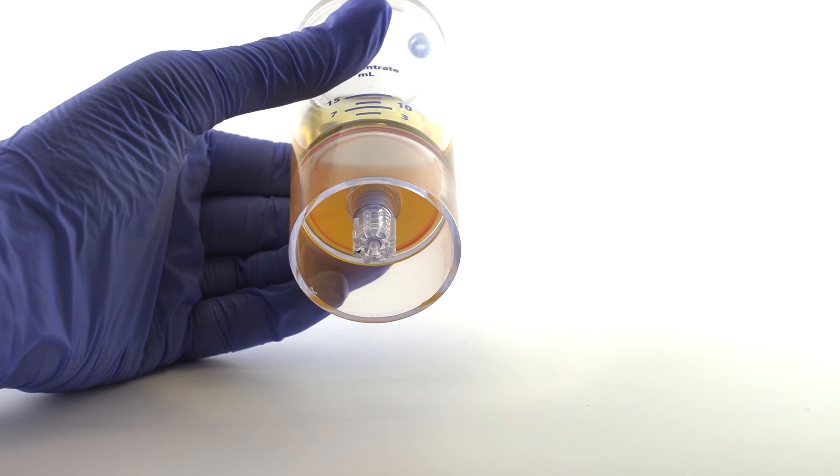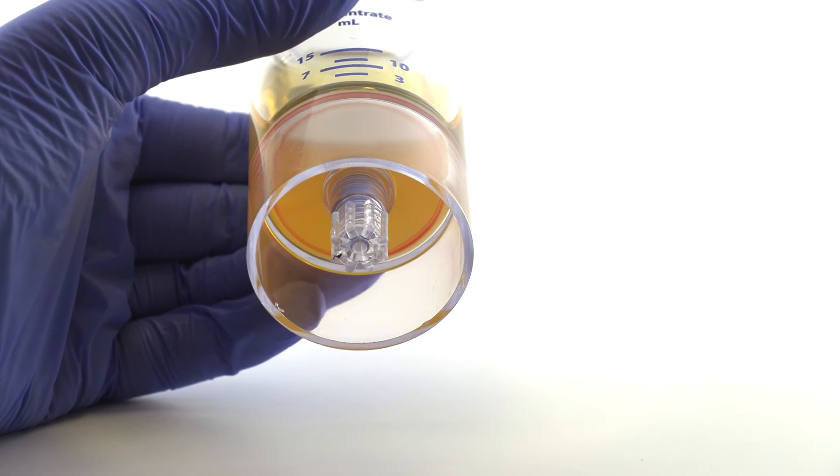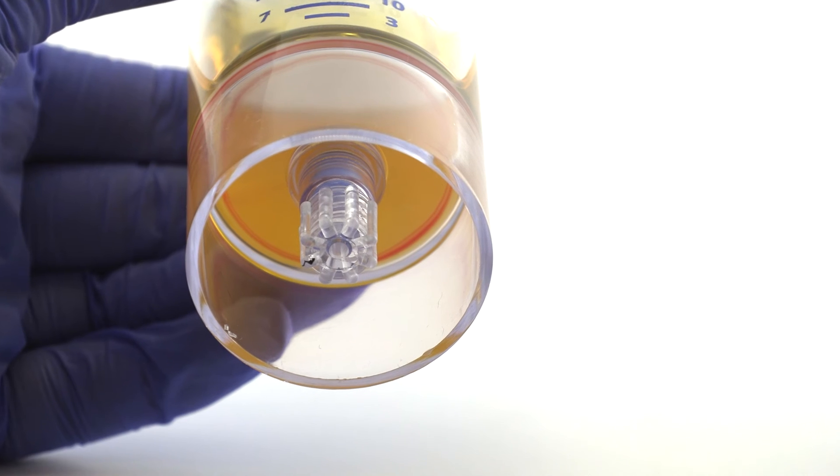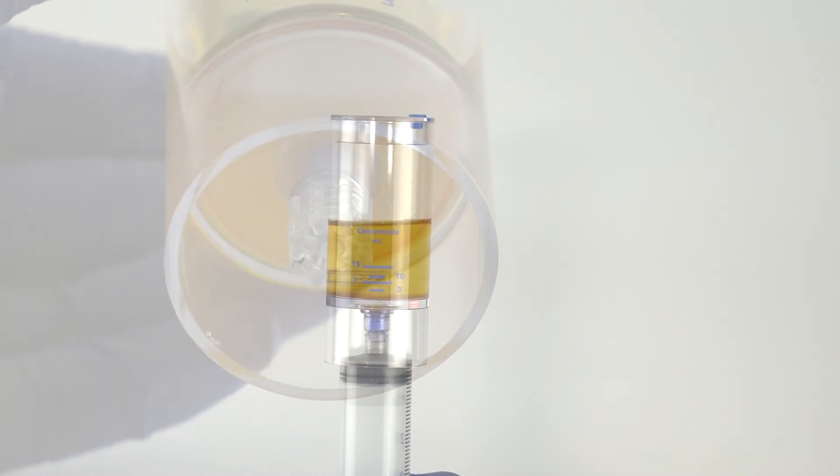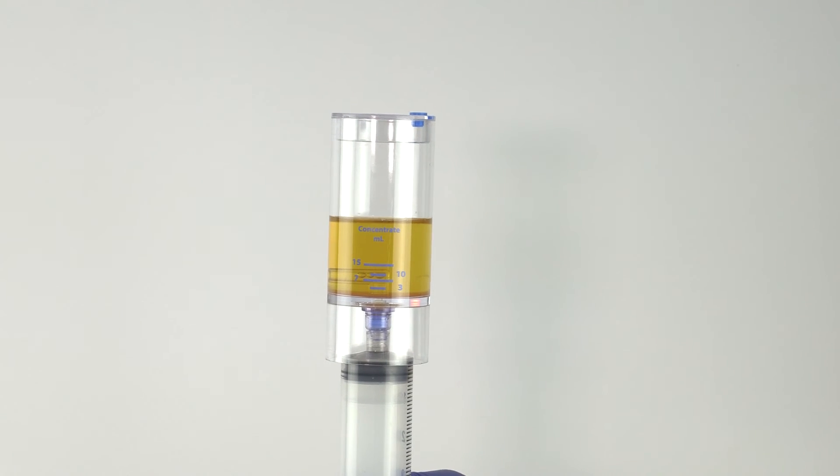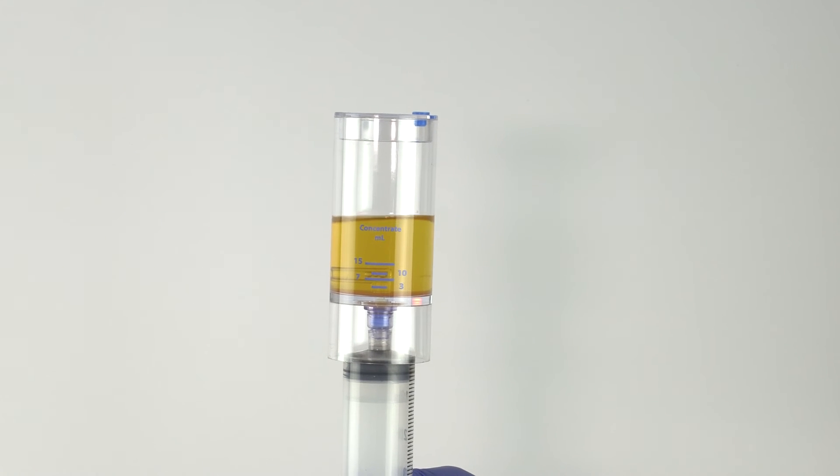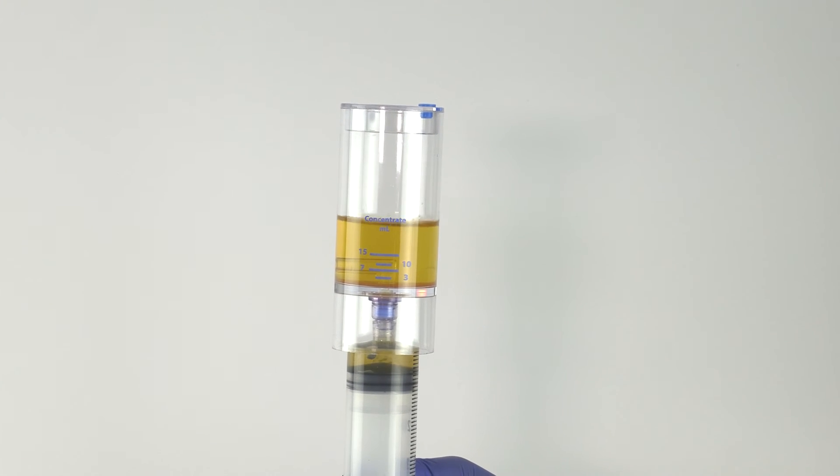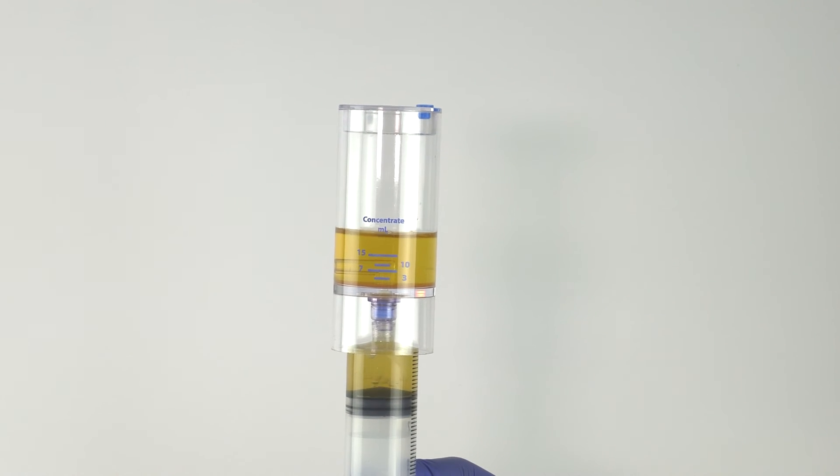After centrifugation, the platelet buffy coat layer will be clearly visible at the bottom of the device. Attach a sterile syringe to the needleless port and aspirate plasma, leaving 7 milliliters or the desired amount in the device.